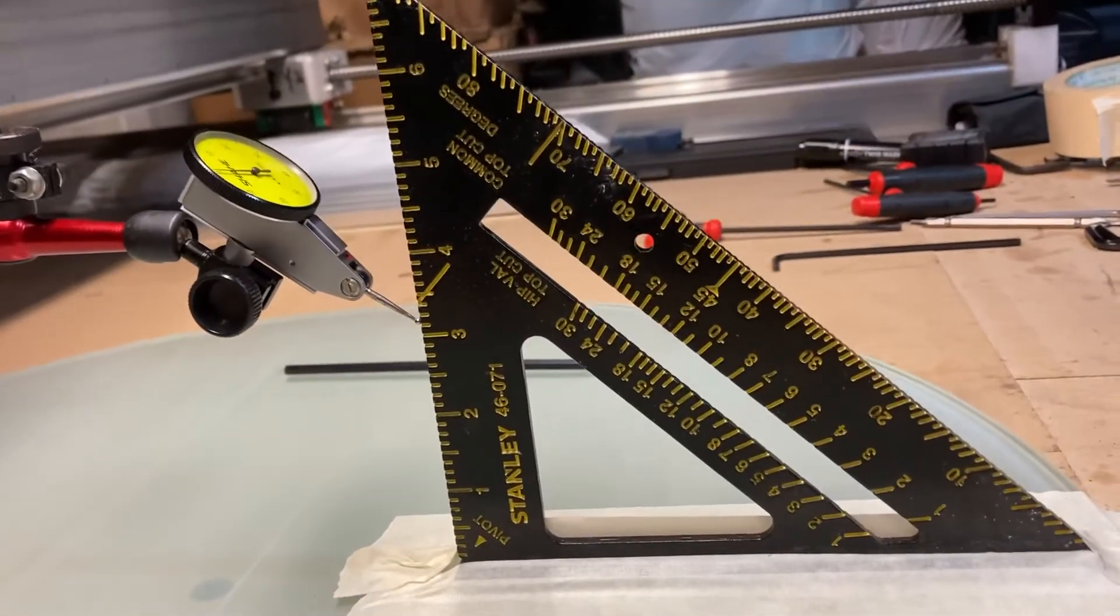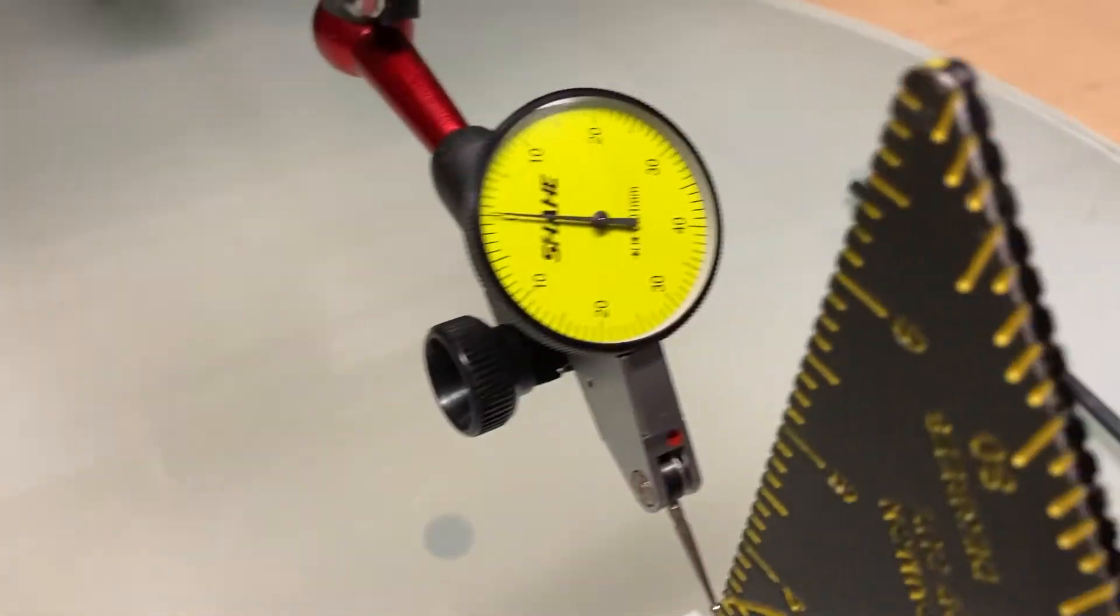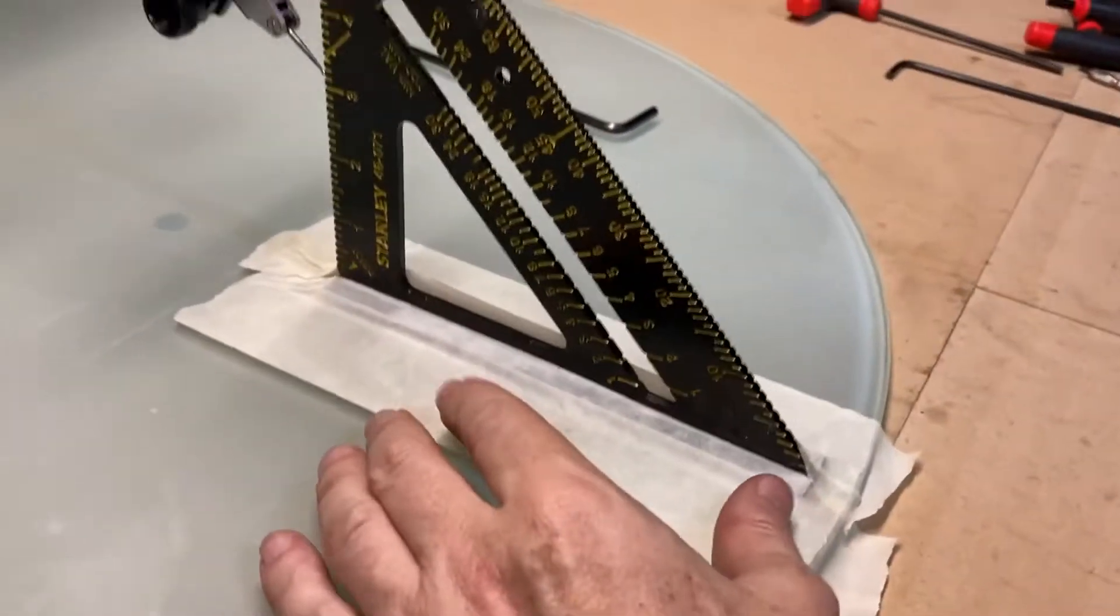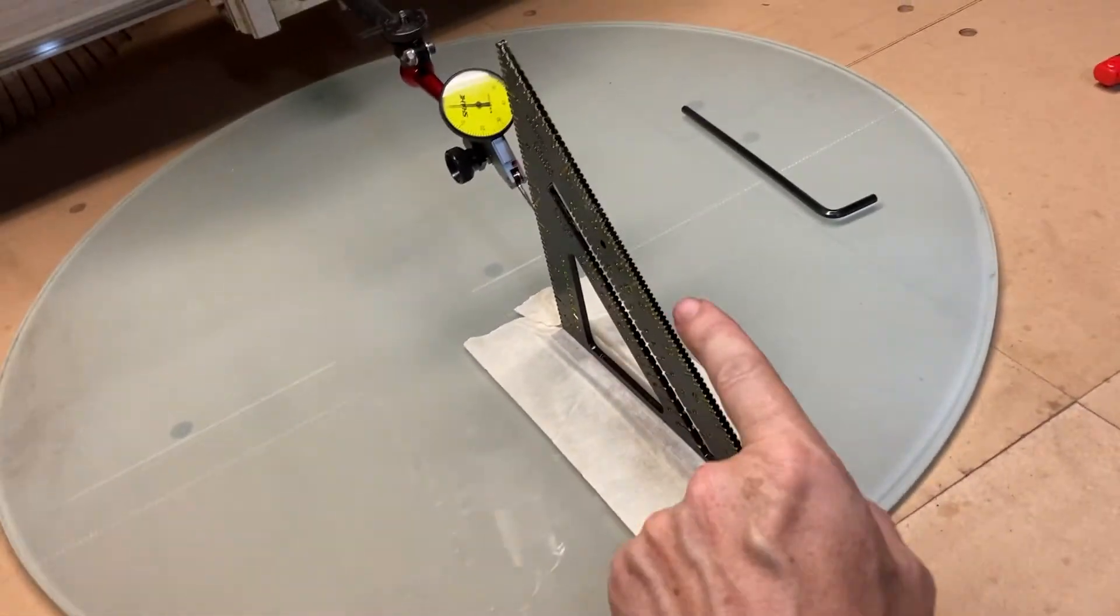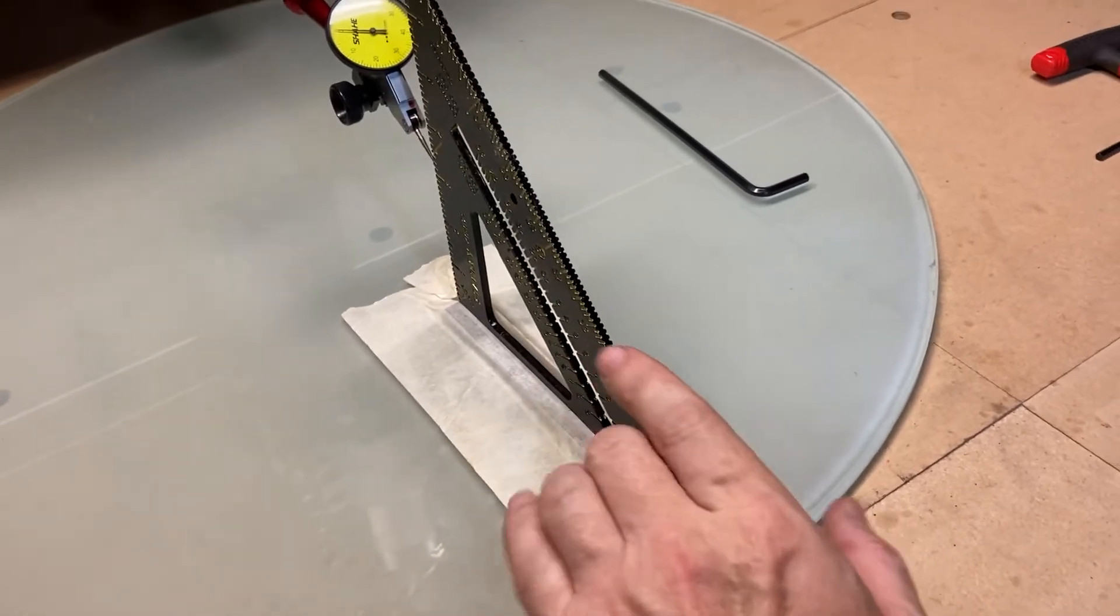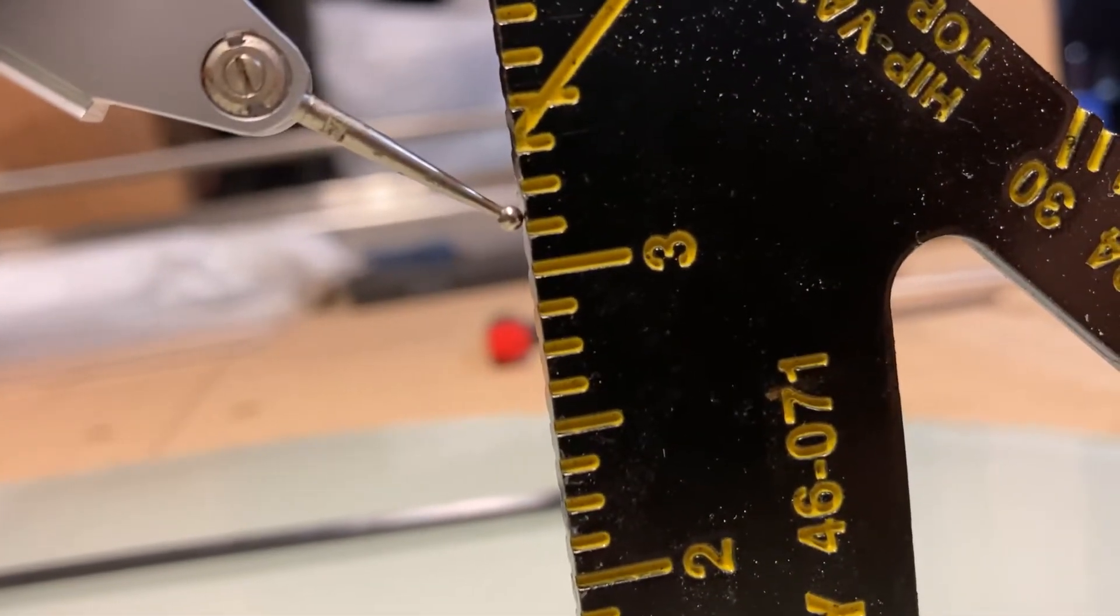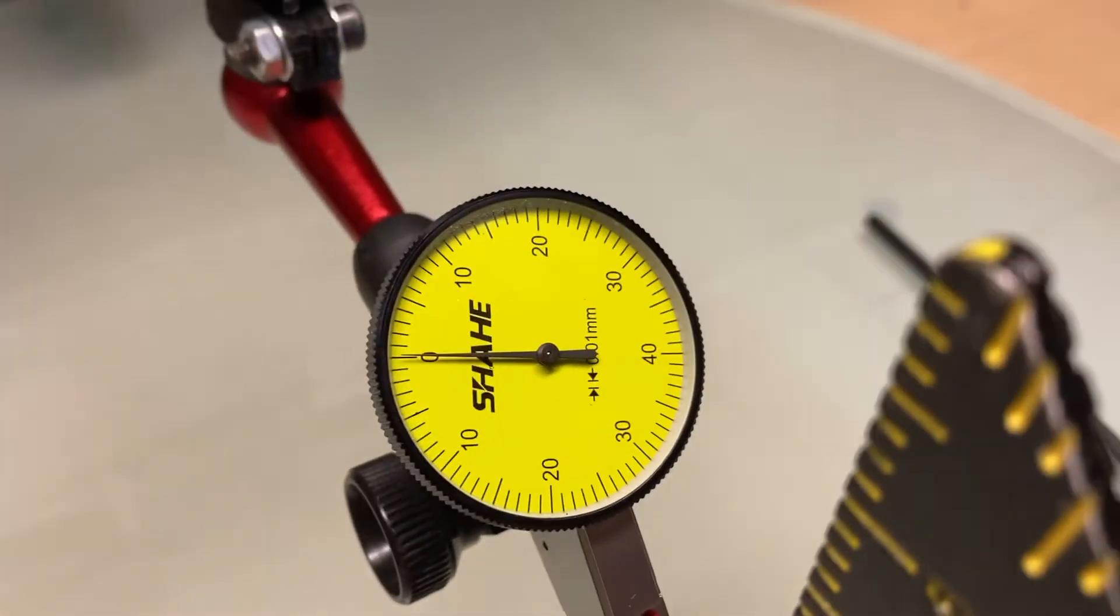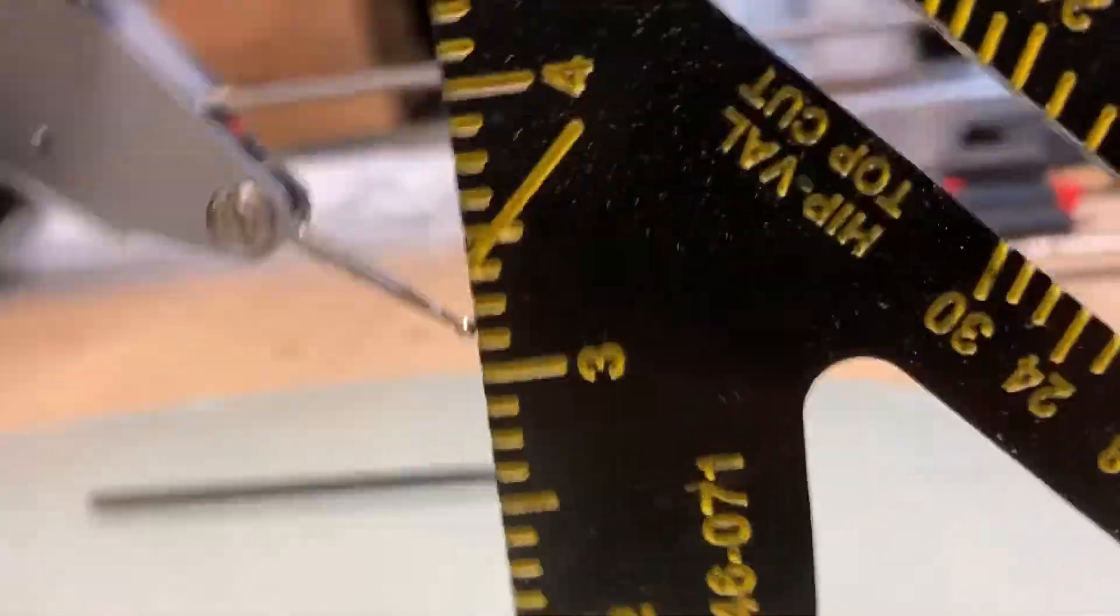I've readjusted the placement of my square backwards so that the ball gauge here just touches and it's at zero with no pressure on it.